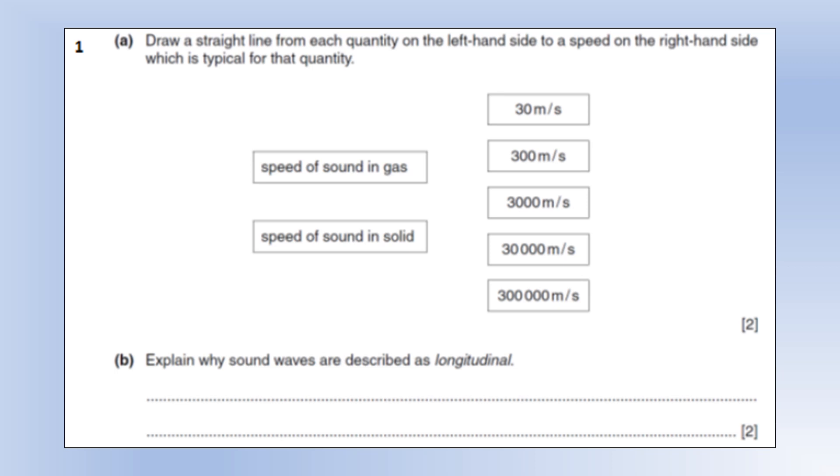Okay, so in this video I'm going to look at some IGCSE questions on waves and optics. Let's start off looking at sound. Now we need to match up the speed of sound in gas and the speed of sound in a solid with its corresponding speed. So the speed of sound in air is 330, so we can match the speed of sound in gas up.